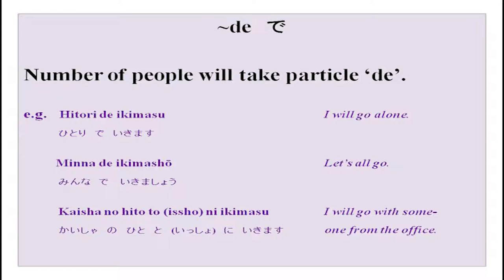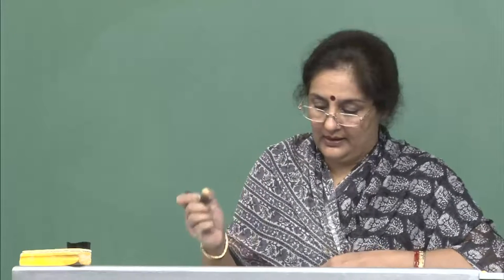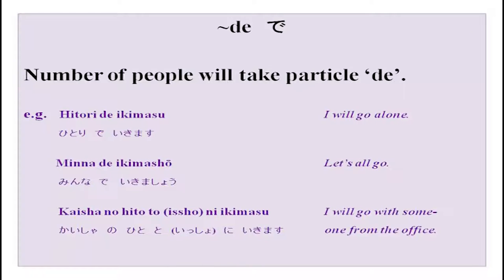We have done a lot of de — for transport, for a group of things, and today nihongo de. There is another way of using de: with numbers. Hitori de, futari de, sannin de. Hitori is one, futari is two, sannin is three, minna de is all. So hitori de alone, futari de two of us, sannin de three people. Hitori de ikimasu — I will go alone; minna de ikimashou — let us all go; kaisha no hito to issho ni ikimasu — I will go with someone from the office.